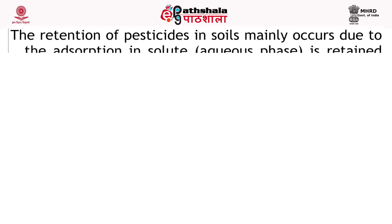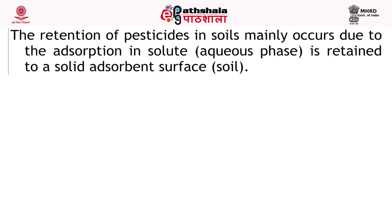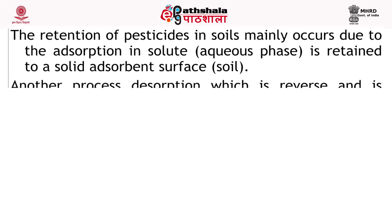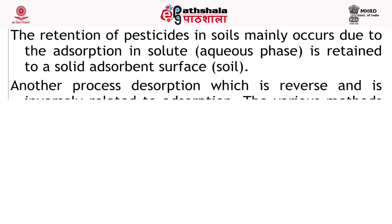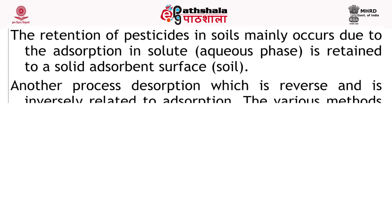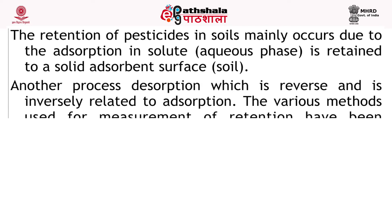The retention of pesticide in soil mainly occurs due to adsorption, where the solute is retained on a solid adsorbent surface, that is soil. The various processes possible for pesticide adsorption due to polar and ionizable groups present in soil are: hydrogen bonding, polar interaction, van der Waals dispersion forces, ion exchange, interaction with metallic cations, charge transfer and hydrophobic effects. Another process, desorption, is the reverse and is inversely related to adsorption.